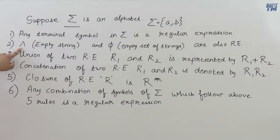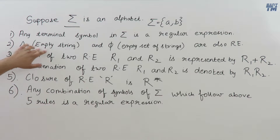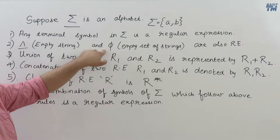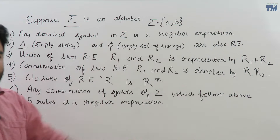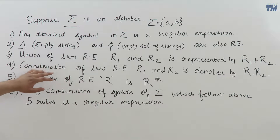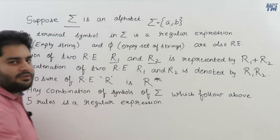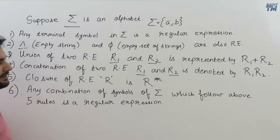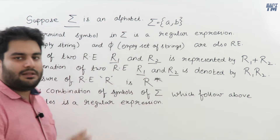The second property is that the empty string (null) is also a regular expression, and so is phi (the empty set). Note the difference: the empty string (null) does not contain a or b but is still a string, whereas phi does not even contain the empty string — it is a fully empty set. Additionally, the union of two regular expressions R1 and R2, written as R1+R2, is also a regular expression, and so is their concatenation R1R2.